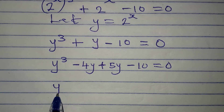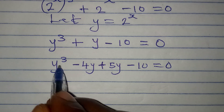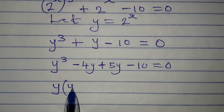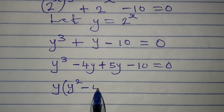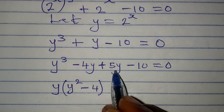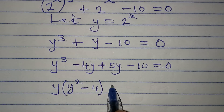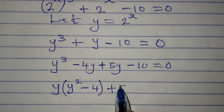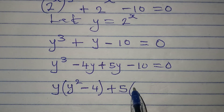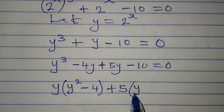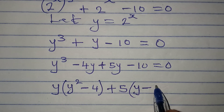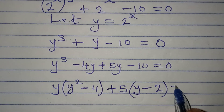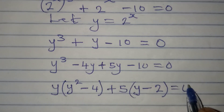If I factorize the first two terms, I'll take y out, giving y squared minus 4. On the other side, 5 is the common factor, giving 5 times bracket y minus 2, and then 10 divided by 5 gives 2. This equals zero.